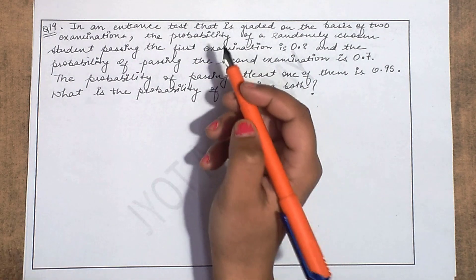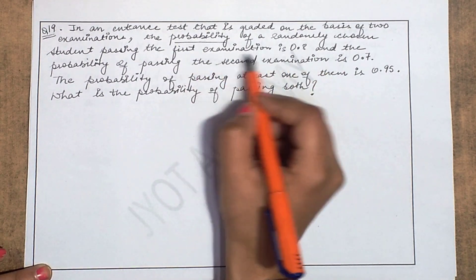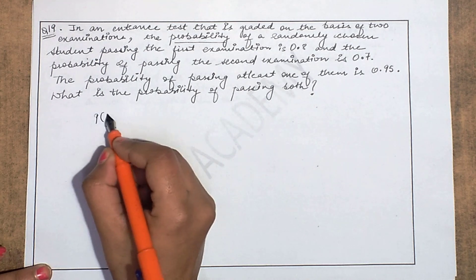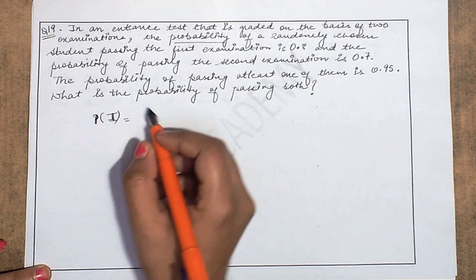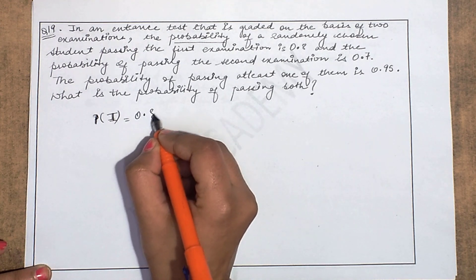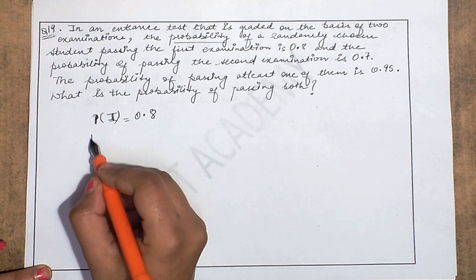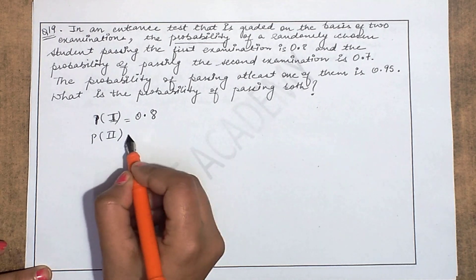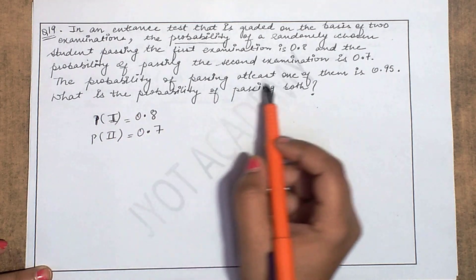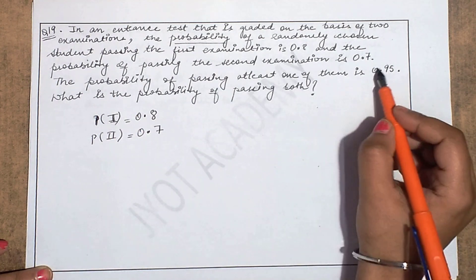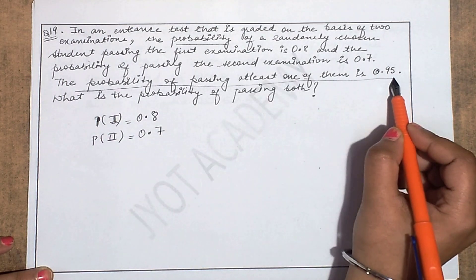Here it is clearly written that you have the probability given for who has passed the first exam. So the probability of the first exam — we are taking it as 0.8. The probability of passing the second exam is 0.7. So the probability of passing at least one of them is given, and this line is very important to understand.